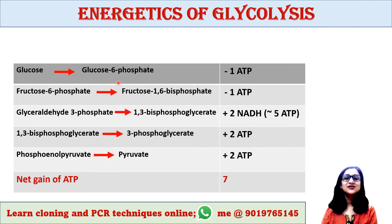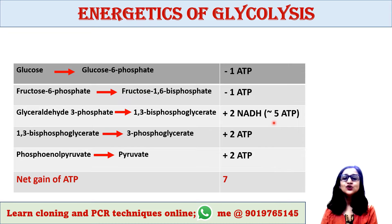A second ATP is consumed when fructose-6-phosphate is converted into fructose-1,6-bisphosphate. Two NADH are generated when glyceraldehyde-3-phosphate is converted into 1,3-bisphosphoglycerate. One NADH is equivalent to 2.5 ATP, hence 2 NADH is equivalent to 5 ATP.